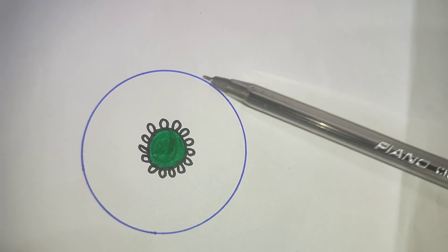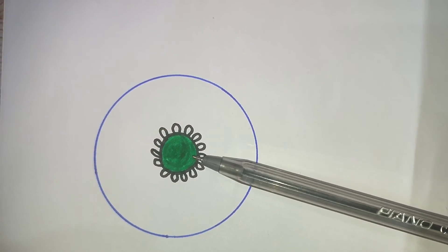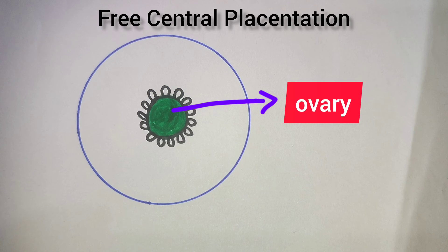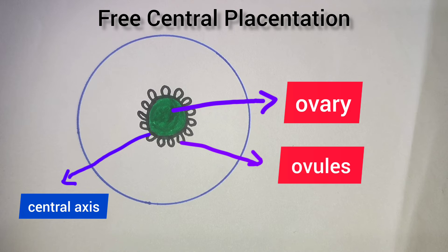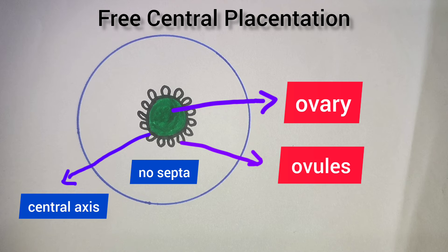In free central placentation, the ovules are attached to a central axis inside the ovary but without septa and without locules. Free central placentation means there is no septa and the ovules are attached in the center of the ovary, commonly found among members of family Caryophyllaceae.